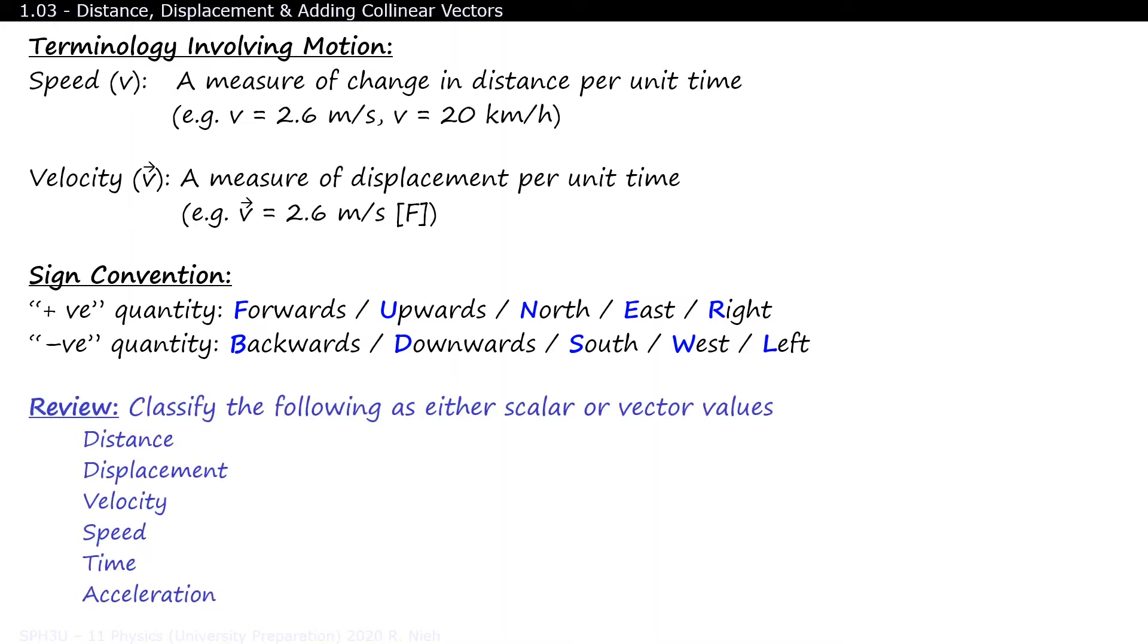Let's review through the definitions that we've covered so far. Classify the following either as a scalar or vector. Ready for the answers? Distance is a scalar quantity. Displacement is a vector quantity. Velocity is a vector. Speed is a scalar.